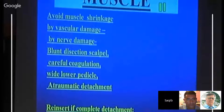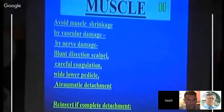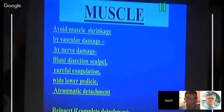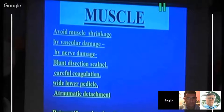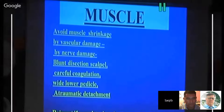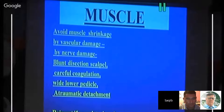When dissecting muscles, avoid causing muscle shrinkage — preserve its vasculature, avoid damaging its nerve supply, and use blunt dissection carefully without excessive retraction, which decreases muscle size. The muscle should have a wider inferior pedicle to preserve its function and should have atraumatic detachment and reinsertion. If complete detachment occurs, trans-osseous points of fixation will restore functional purpose.